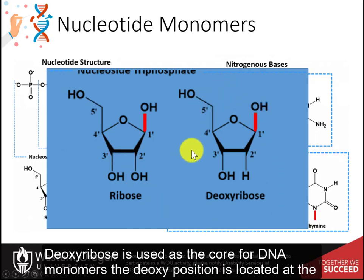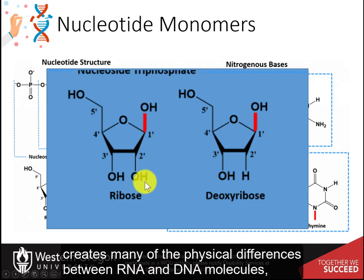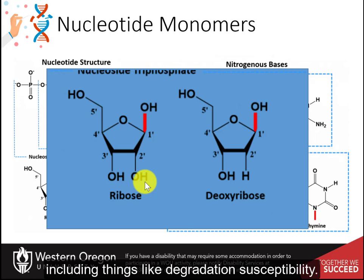Deoxyribose is used as the core for DNA monomers. The deoxy position is located at the two prime carbon. This small structural difference creates many of the physical differences between RNA and DNA molecules, including things like degradation susceptibility.